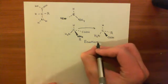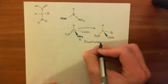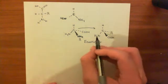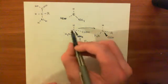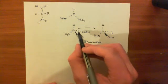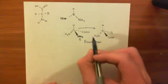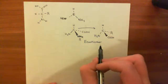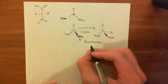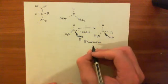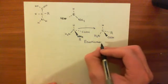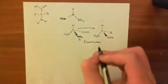Enantiomers literally means that they're the mirror images of one another. So if this molecule were to look in the mirror, it would see this one looking back at it.